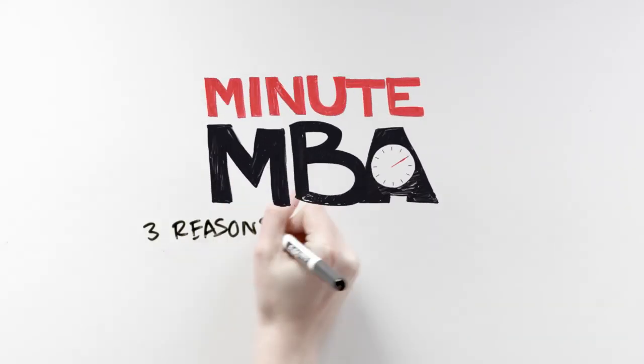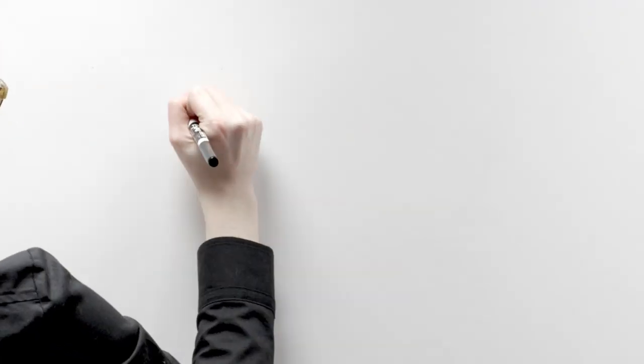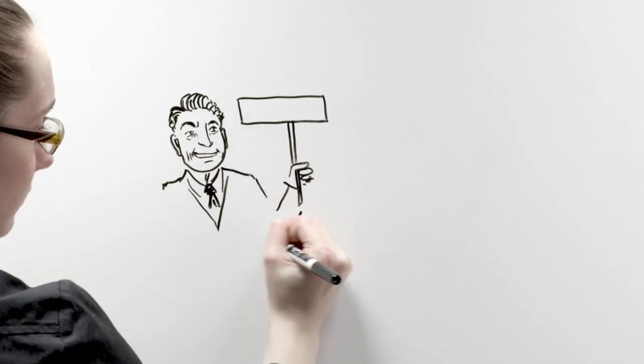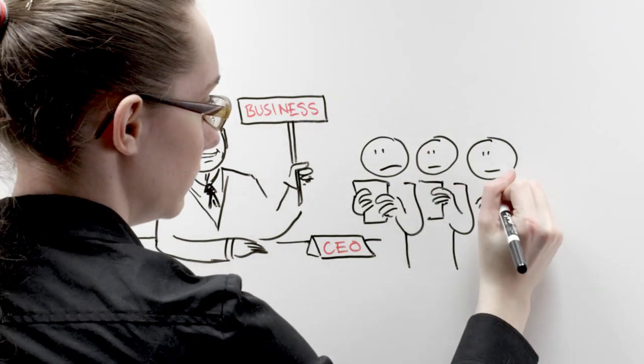Minute MBA: three reasons why government shouldn't be run like a business. With Reaganism of the 1980s came the idealistic political stance that governments should be run like a business, with the president as both CEO and commander-in-chief and Americans as shareholders and customers.